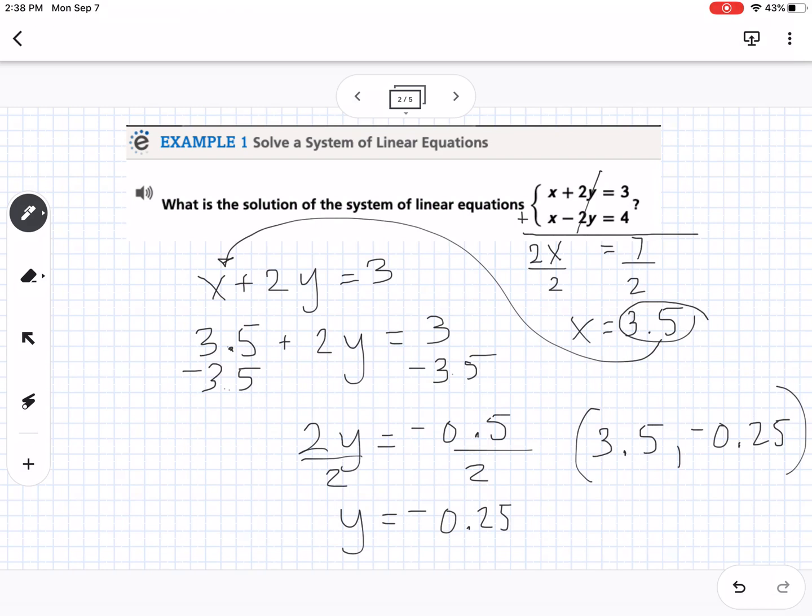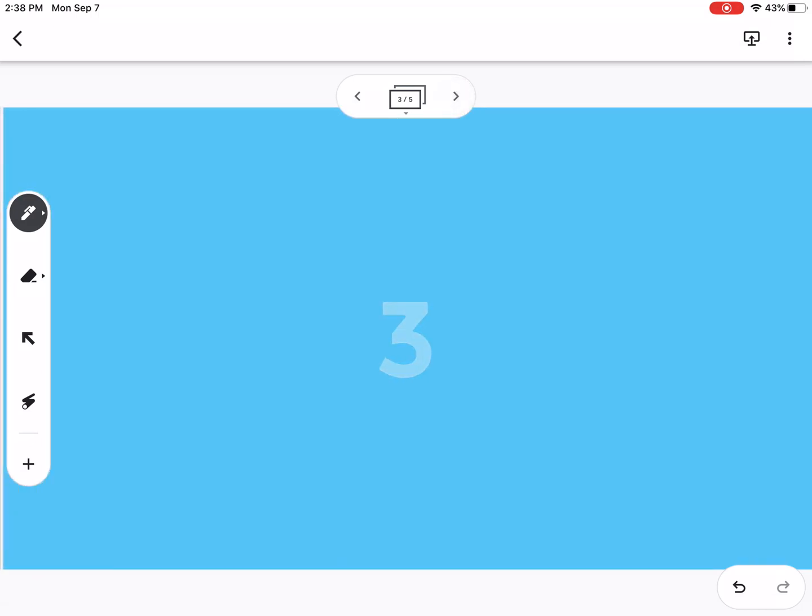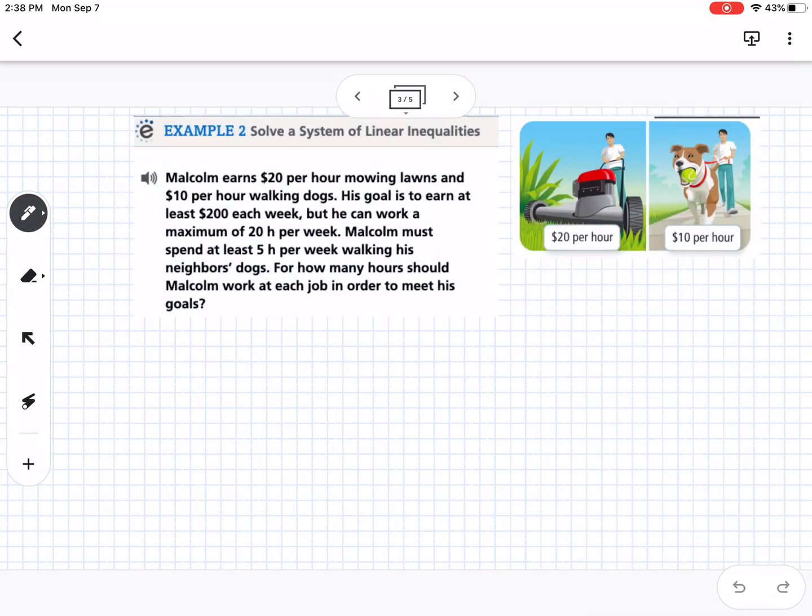That is two variables. The thing about Algebra 2 is we get into more complicated things. Example 2 is a system of inequalities. Malcolm earns $20 per hour mowing lawns and $10 per hour walking dogs. His goal is to earn at least $200 each week, but he can work a maximum of 20 hours per week. Malcolm must spend at least 5 hours a week walking his neighbor's dog. For how many hours should Malcolm work at each job in order to meet his goals?